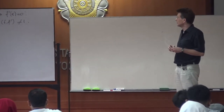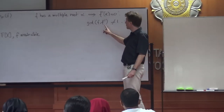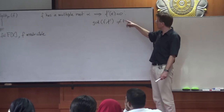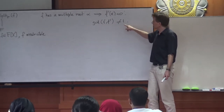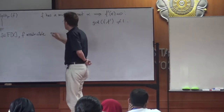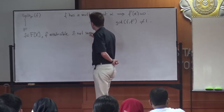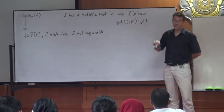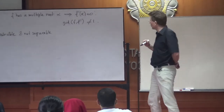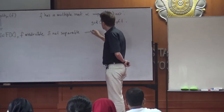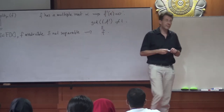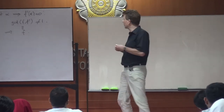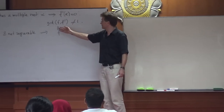If your F is irreducible, the GCD of F and F prime is in particular a divisor of F. And if F is irreducible and the divisor is not 1 — not a unit, up to a constant — it has to be equal to F. So if F is irreducible and not separable, then this GCD is a non-trivial divisor of F. But since F is irreducible, the GCD must actually equal F.